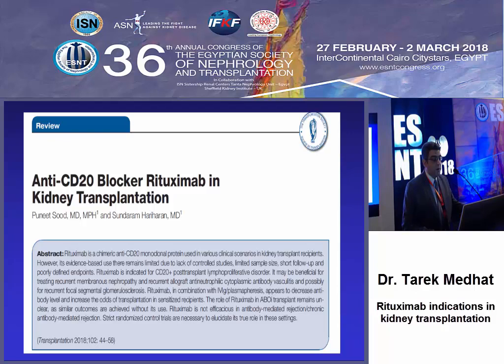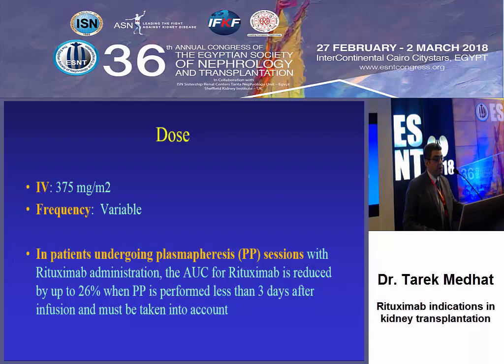The dose is 375 milligrams per meter squared body surface area, given either weekly or every two weeks according to the indication and protocol. If you are going to use plasmapheresis after rituximab, please remember that the AUC for rituximab is reduced by 26% if plasmapheresis is done within three days after infusion.